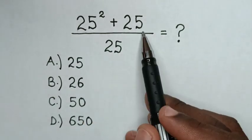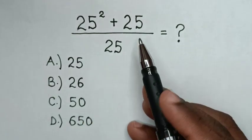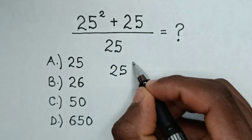So, from the numerator, 25 is common. So we take 25 out of bracket.